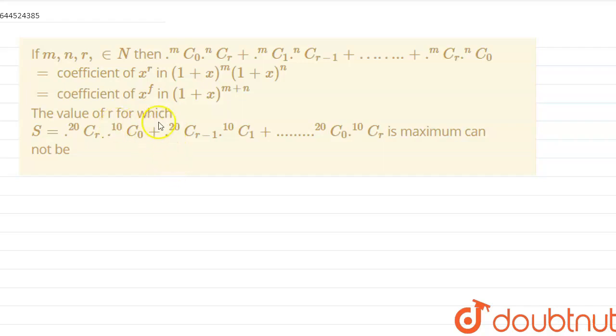So, we need to find the value of r for which this function is maximum. See, it is given to us that in the binomial expansion of (1+x)^m·(1+x)^n, we are taking the coefficient of x^r.